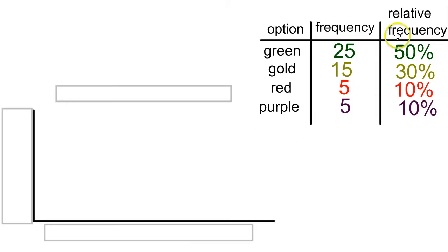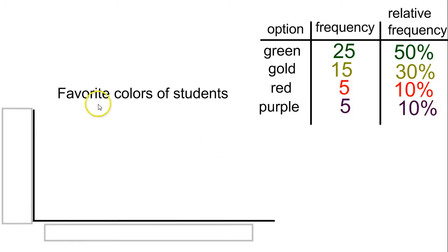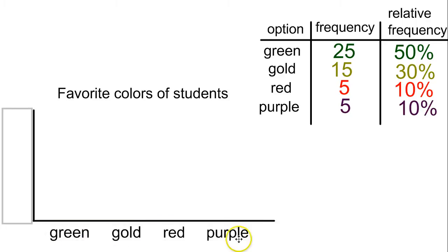Once you have your frequencies and relative frequencies, you can use that to create a couple different types of graph. First one is a bar graph. Whenever you're graphing something, you want to label it because the whole point of a graph is to make it easy to interpret data. And the data is not going to be very easy to interpret if you don't know what it is. So favorite colors of students is what I decided to call this one. And across the bottom, you're going to have your different options, your different things: green, gold, red, purple.